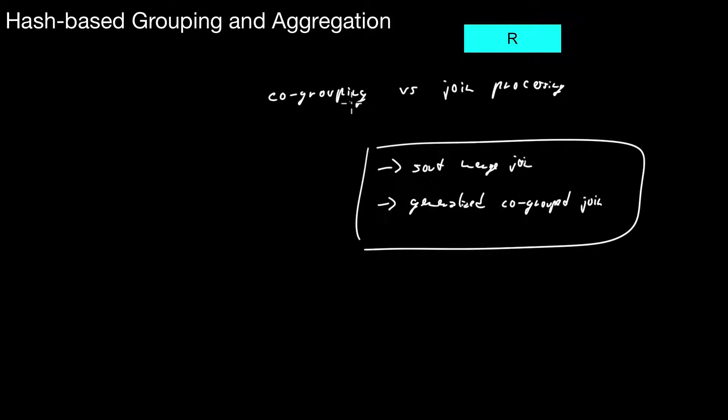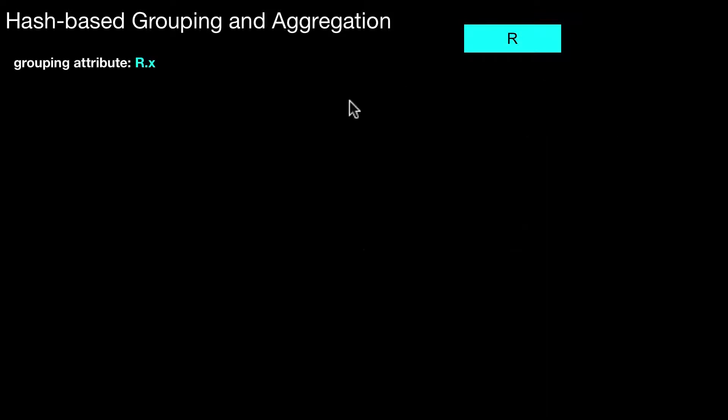There are basically only two techniques that are important: one is hash-based, the other is sort-based. So let's take a look. We have again a grouping attribute, so we group on attribute x of relation R. We also need an aggregation function. If you go back to SQL for a moment, we want to implement something like this: SELECT R.x, aggregate...